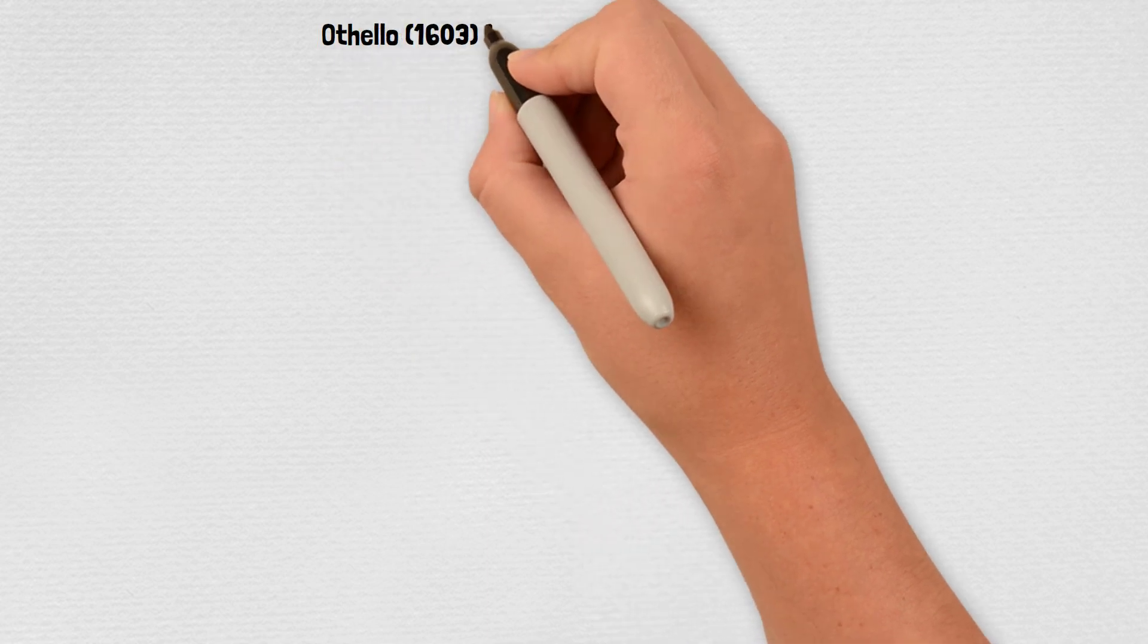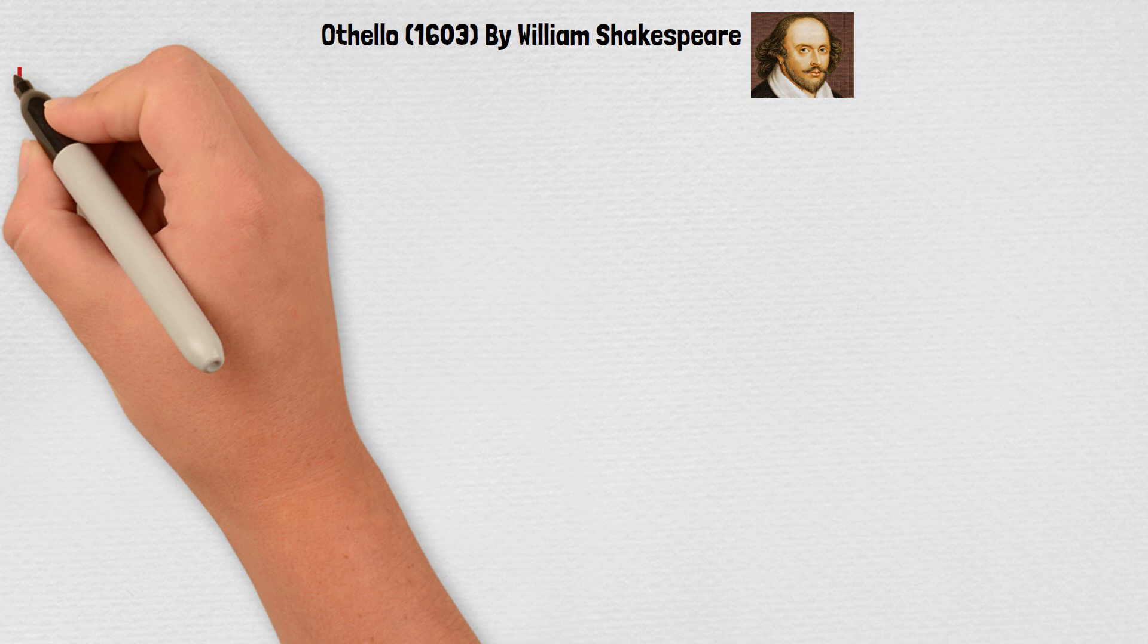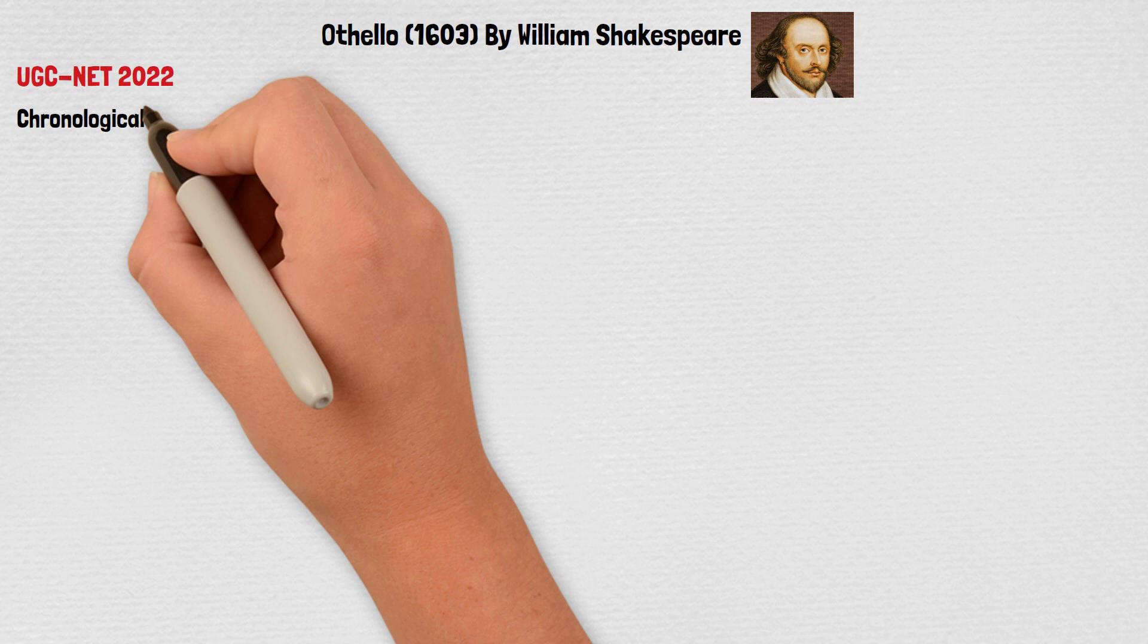Good morning students. Othello is a tragedy written by Shakespeare and in the recent UGC Net 2022 examination there was a question to set the tragedies of Shakespeare in chronological order. So try to remember the chronological order of all the tragedies.